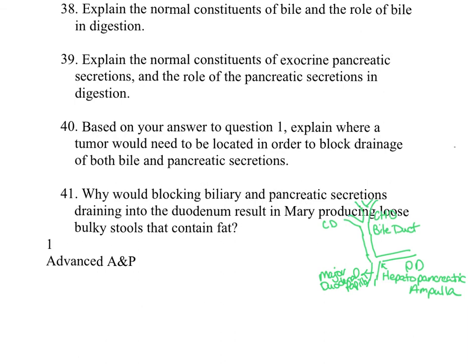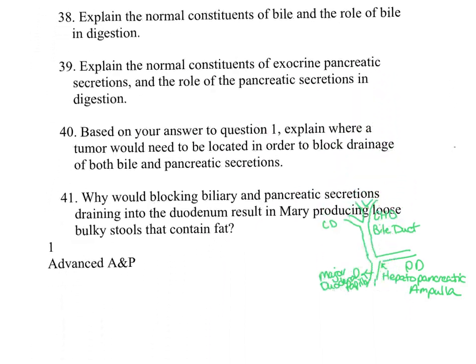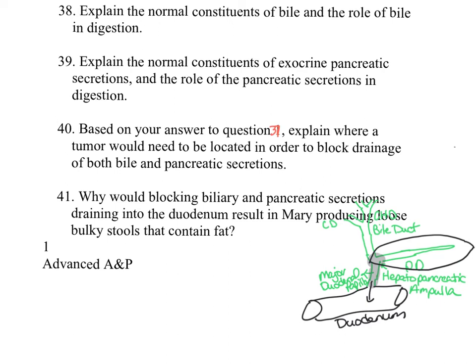Question forty: based on your answer to question thirty-seven, explain where a tumor would need to be located in order to block drainage of both bile and pancreatic secretions. The tumor has blocked drainage of both bile and pancreatic secretions into the duodenum. A single tumor capable of doing this must be located in a region where both ducts run close together or are united. Possible locations include the hepatopancreatic ampulla, the major duodenal papilla, and within the head of the pancreas, through which both the bile duct and pancreatic duct travel.